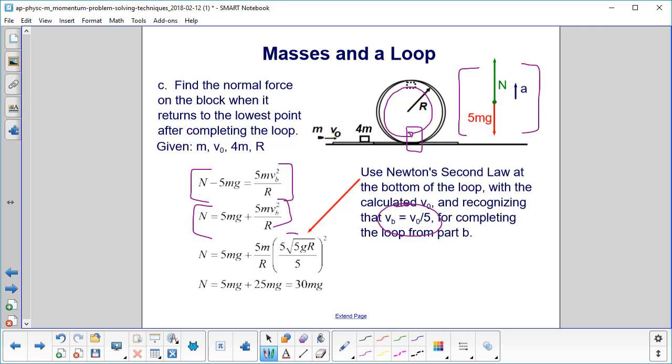We divide it by 5, carry out the algebra, and we have the normal is 30mg.